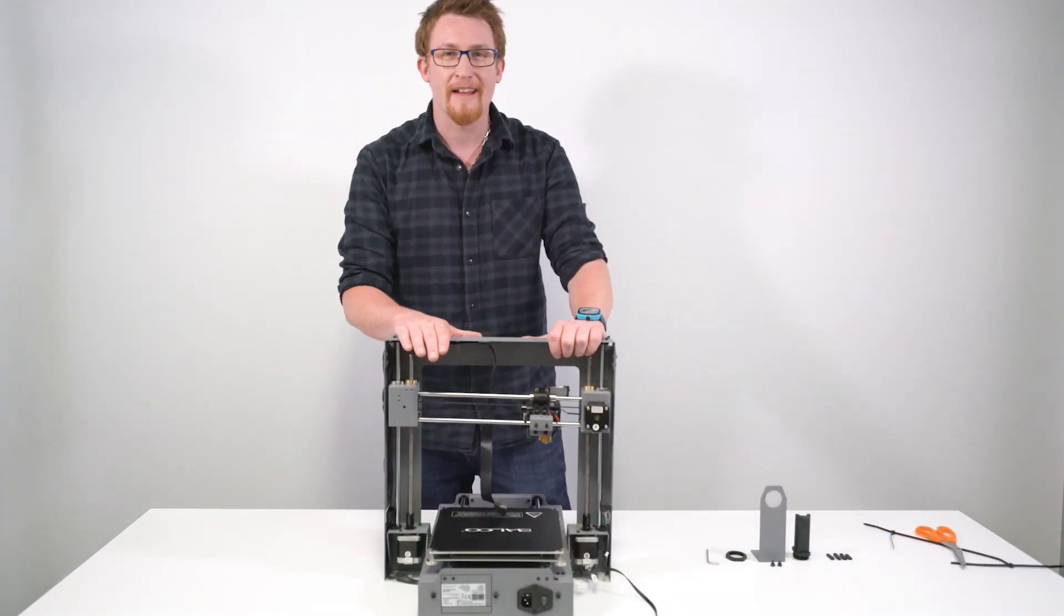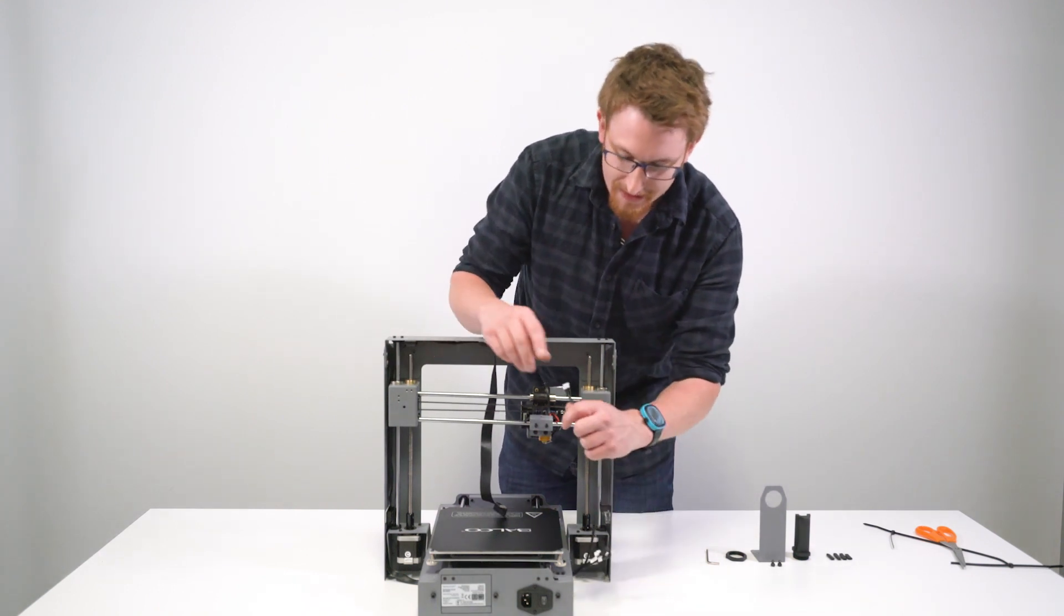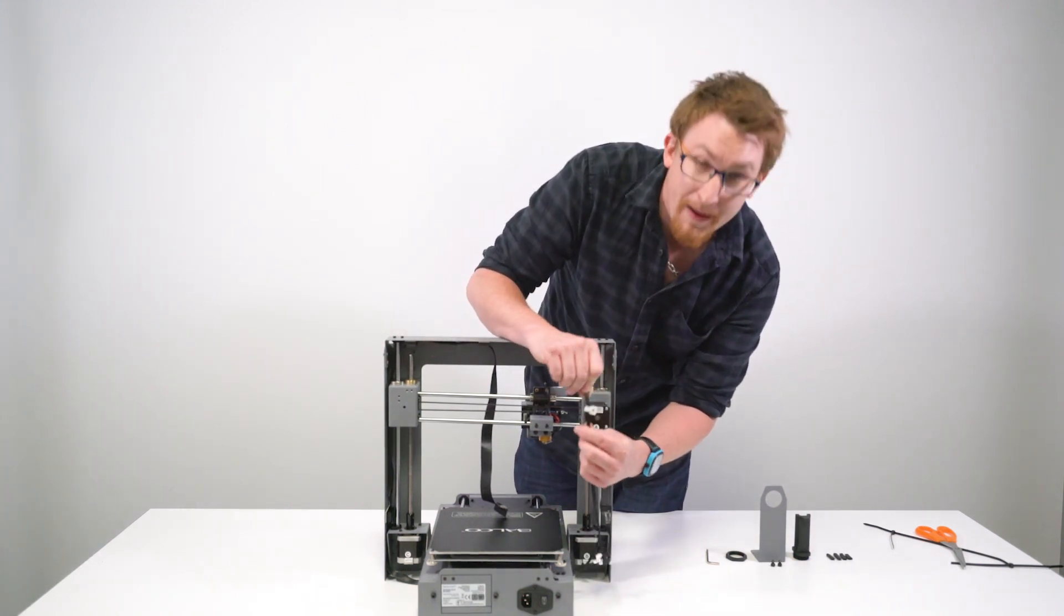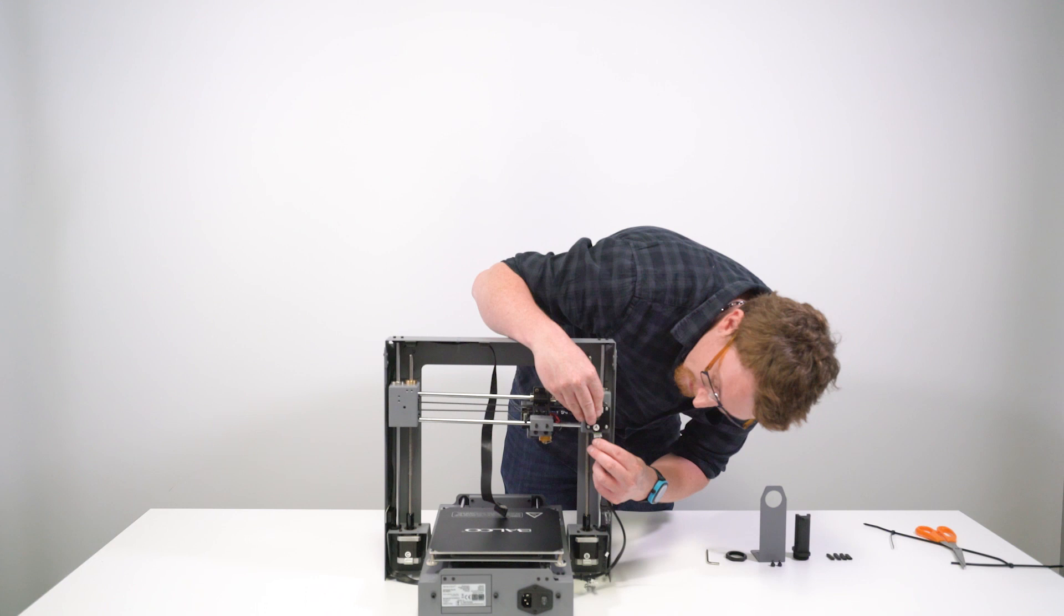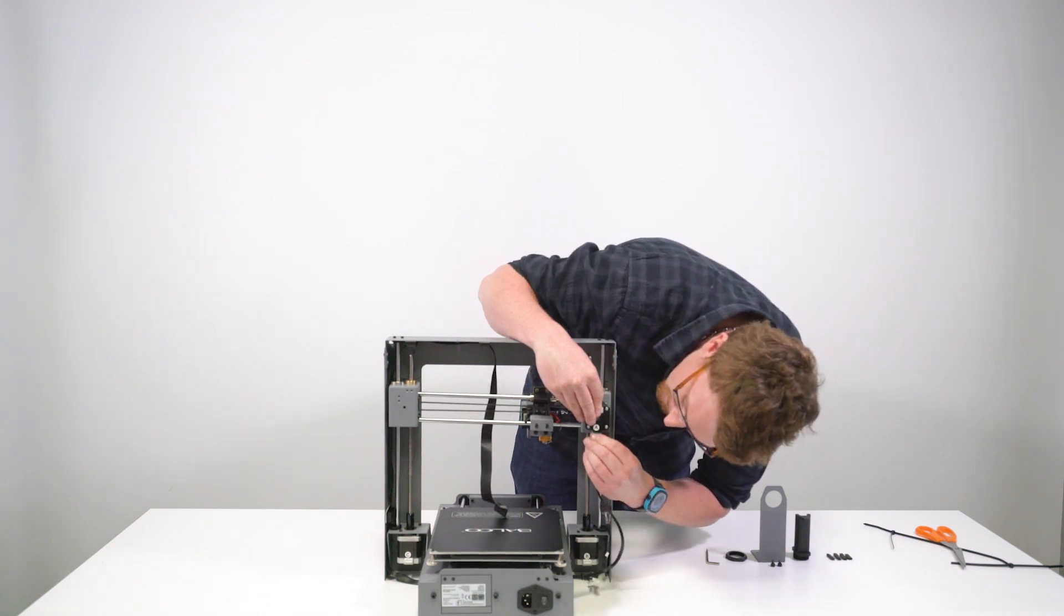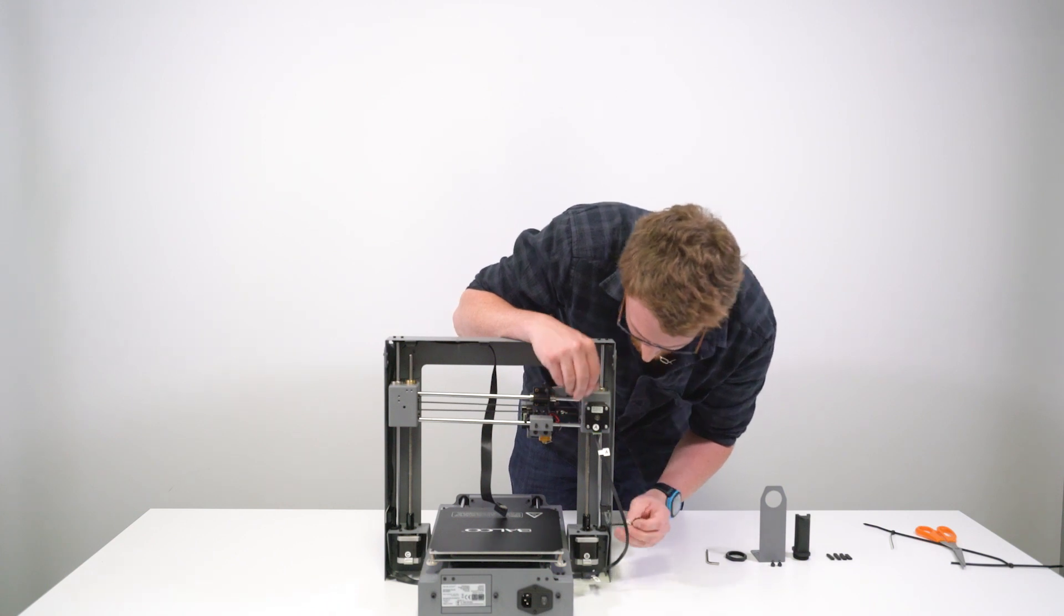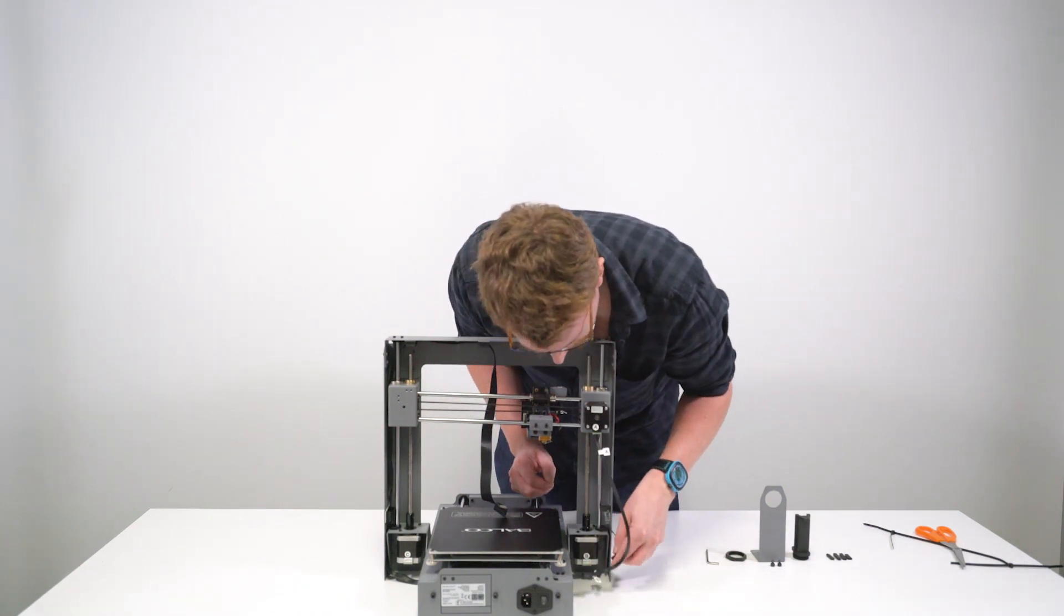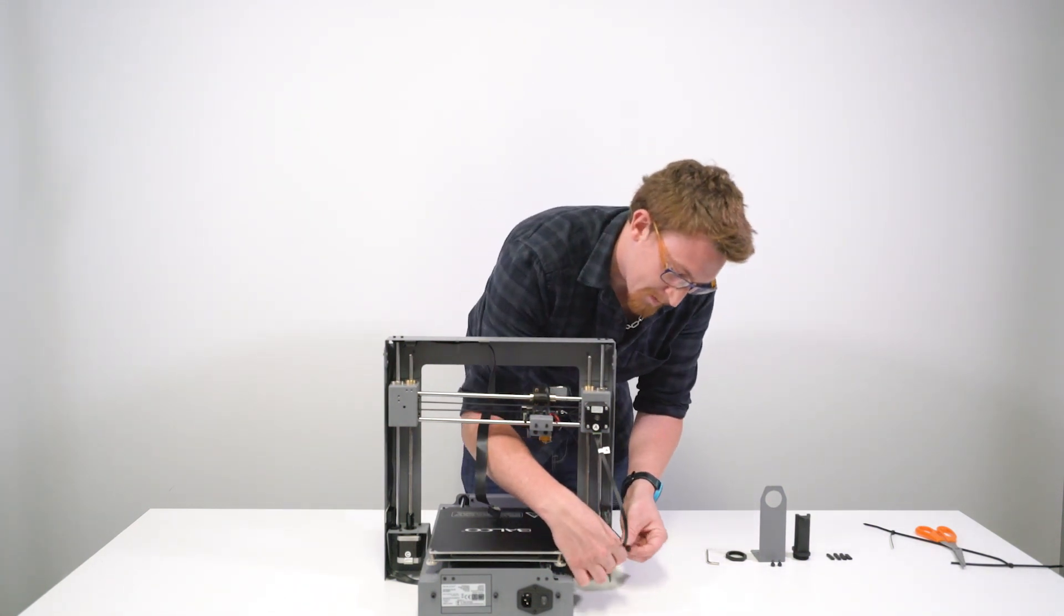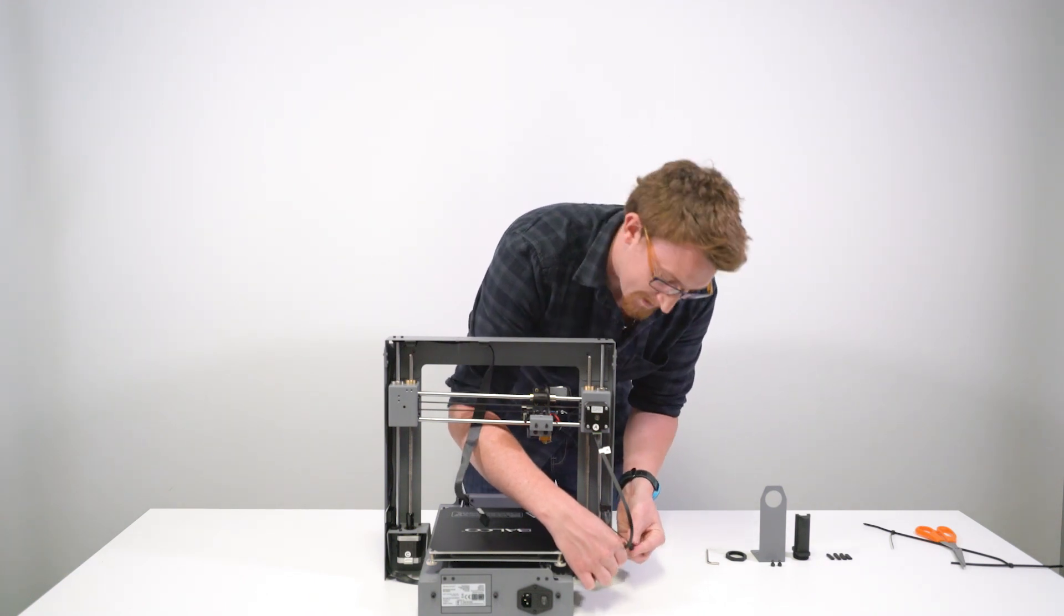Once the bolts are nice and tight, we'll get stuck into putting the cables in. Now what you want to do is grab A and place that into the stepper motor A here, like so. Then you'll see D. What we're going to do is put that into D there.